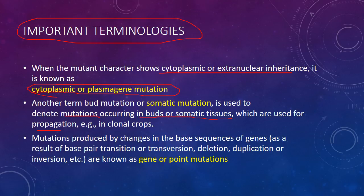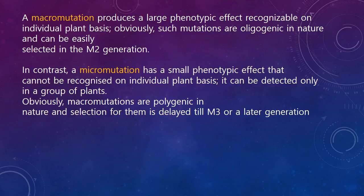Point gene mutation is produced mainly by changes in the base sequence of genes — as a result of base pair transition, transversion, deletion, duplication, or inversion. Macro mutation is a mutation which produces a large phenotypic effect recognizable on an individual plant basis; such mutations are oligogenic in nature and can be easily selected in the M2 generation.